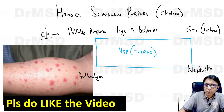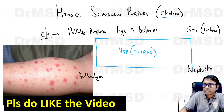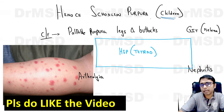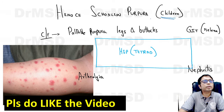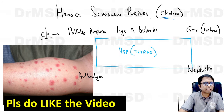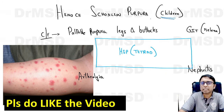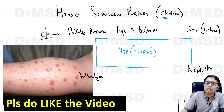Henoch-Schönlein purpura is basically seen in children, though it can also occur in adults. The difference is that in children it is going to have a very benign course, whereas in adults there is going to be a relatively severe course.